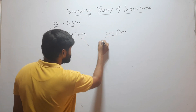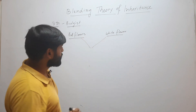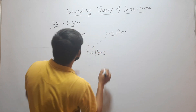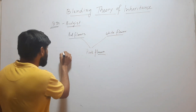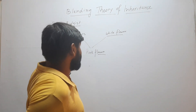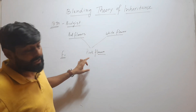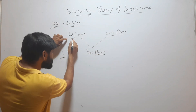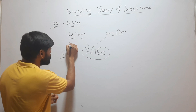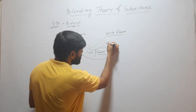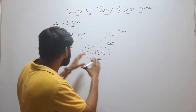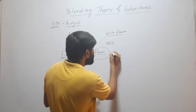When I cross them, I will get a pink flower. According to blending theory of inheritance, this F1 offspring will be pink. So these plants from a cross between red flower and white flower will be pink. This plant gets its trait — red from one parent and white from the other — and then they blended; they mixed, and after mixing red and white we get pink color.